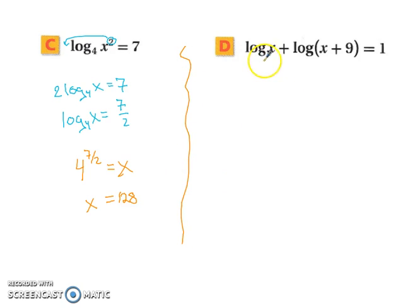All right, so now let's try d. We have log of x plus the log of x plus 9 equals 1. So that's like saying the log of x times x plus 9 equals 1 because when we add, we multiply them together. So that way we have a single logarithm.